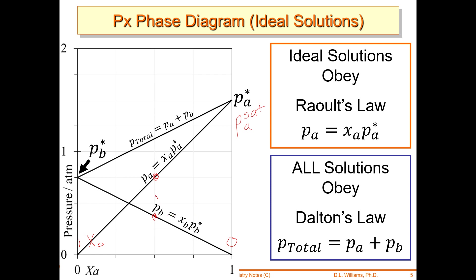PA plus PB equals P total — that's Dalton's Law. You could do that along all these lines and get a straight line connecting the two pure vapor pressures. This would be the ideal case — molecules that are compatible with each other, that like each other just as much as they like themselves. No difference in mixing them — the red and blue marble example. This is the simplest PX diagram you'll ever see. It is at a given temperature, so if you change the temperature, the lines move, because these are the vapor pressures of the pure substances at that given temperature.